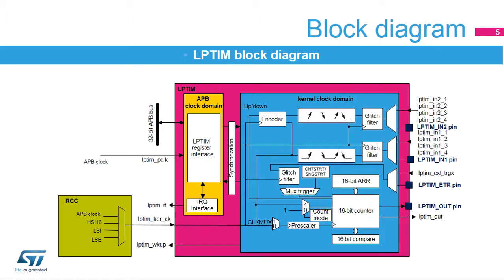The low-power timer is a peripheral with two clock domains. The APB clock domain contains the peripheral's APB interface. The kernel clock domain contains the low-power timer peripheral's core functions, and can be clocked by internal clock sources or from an external clock source through the timer's LP-TIM-IN1 input.